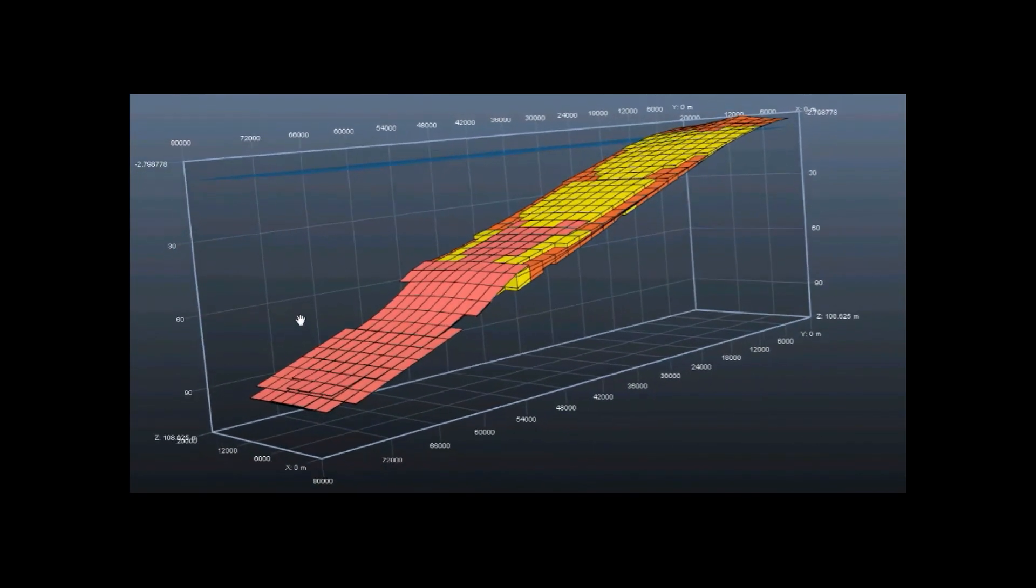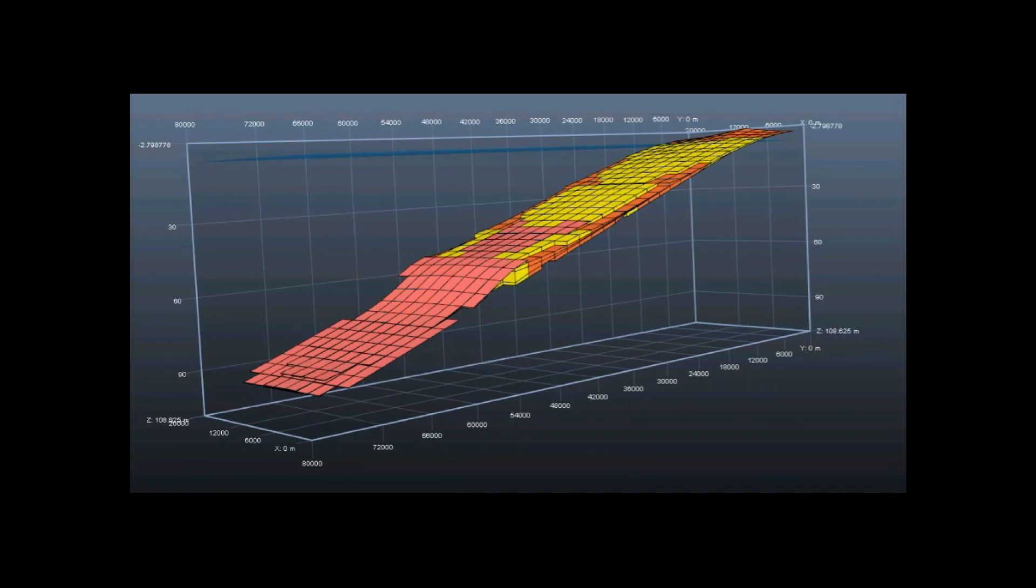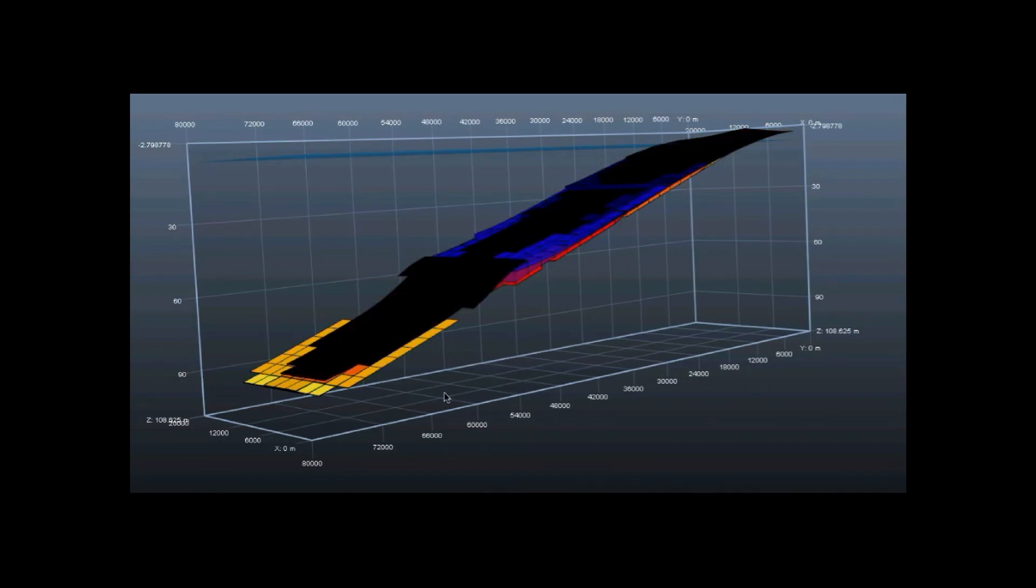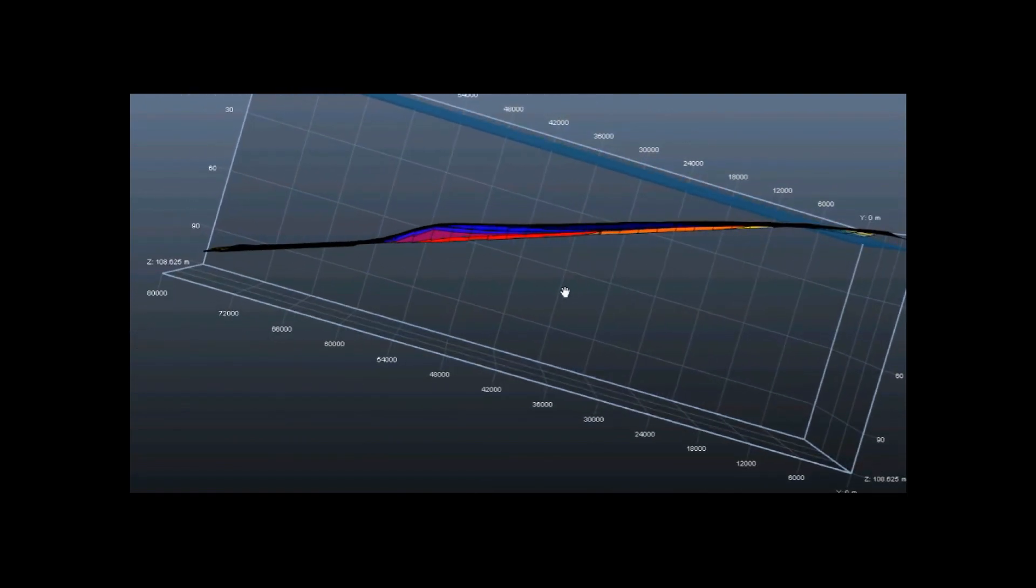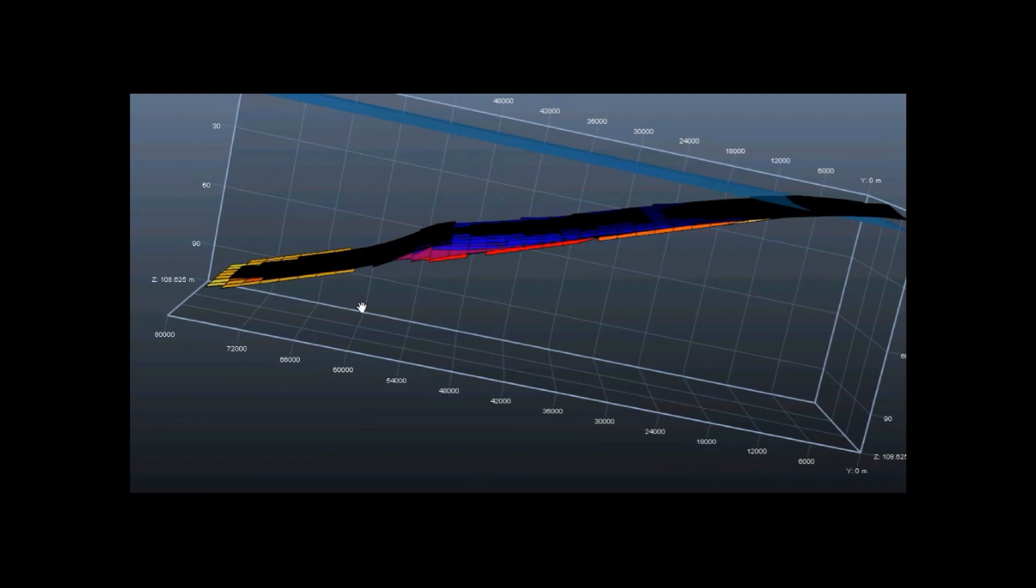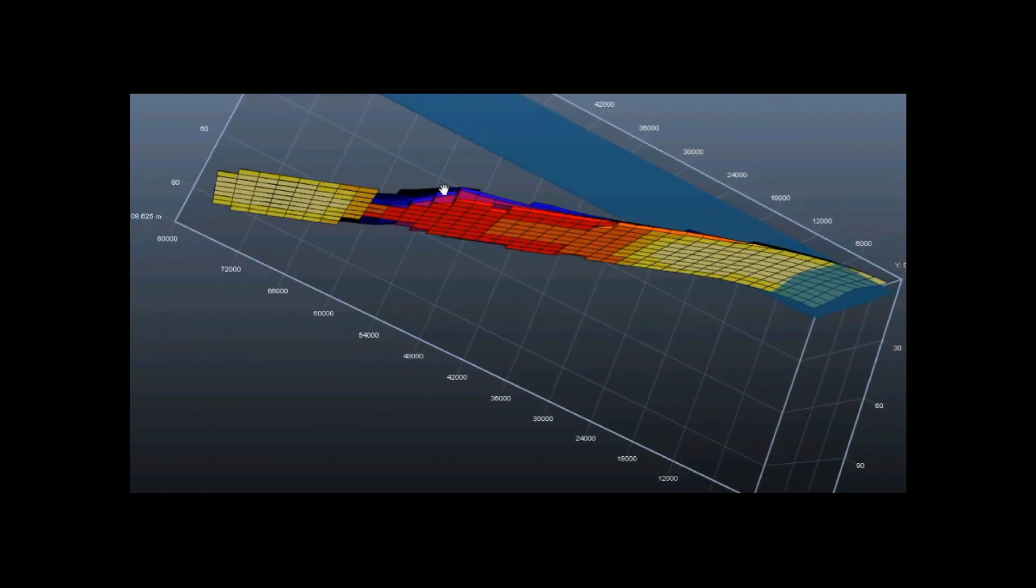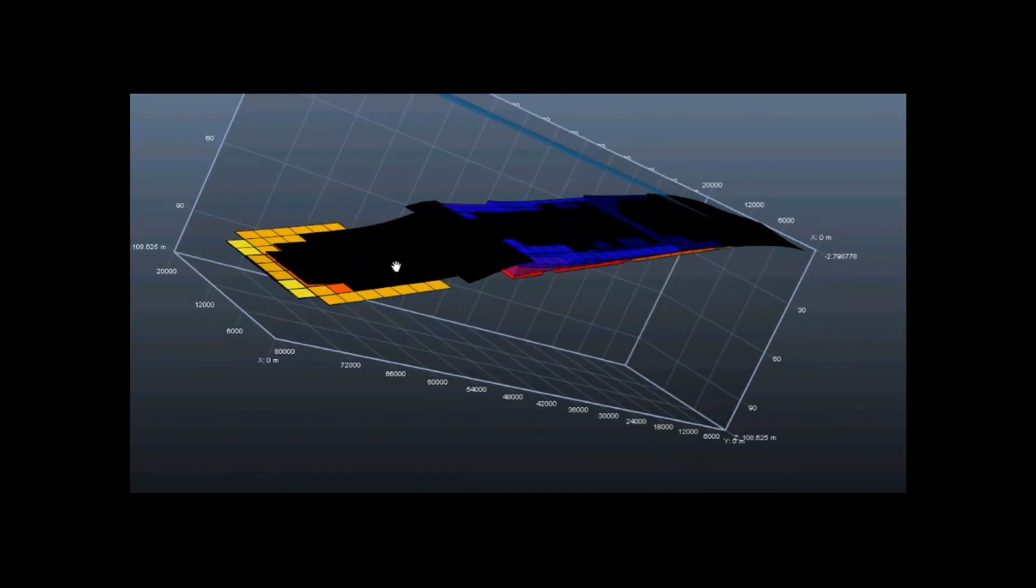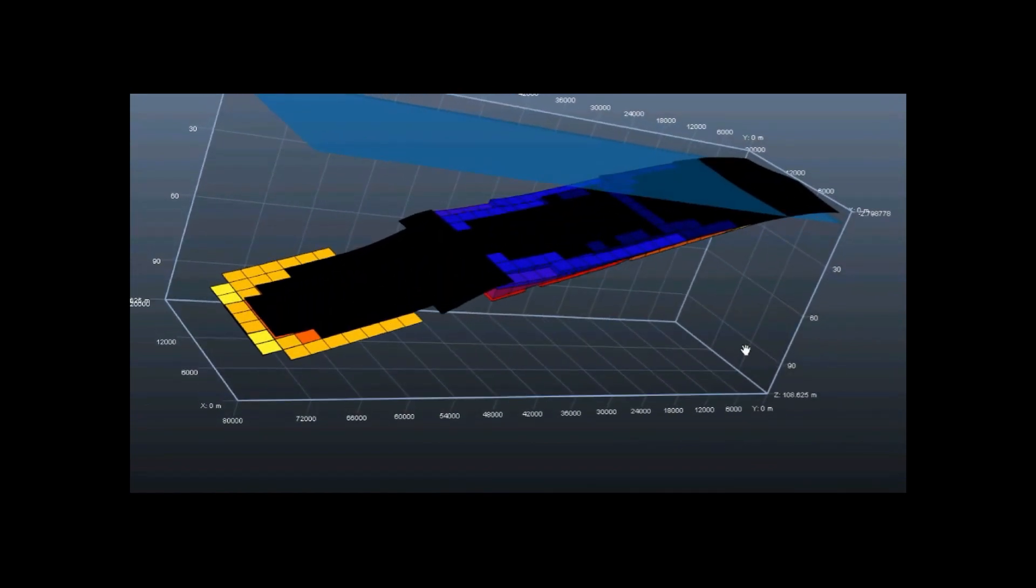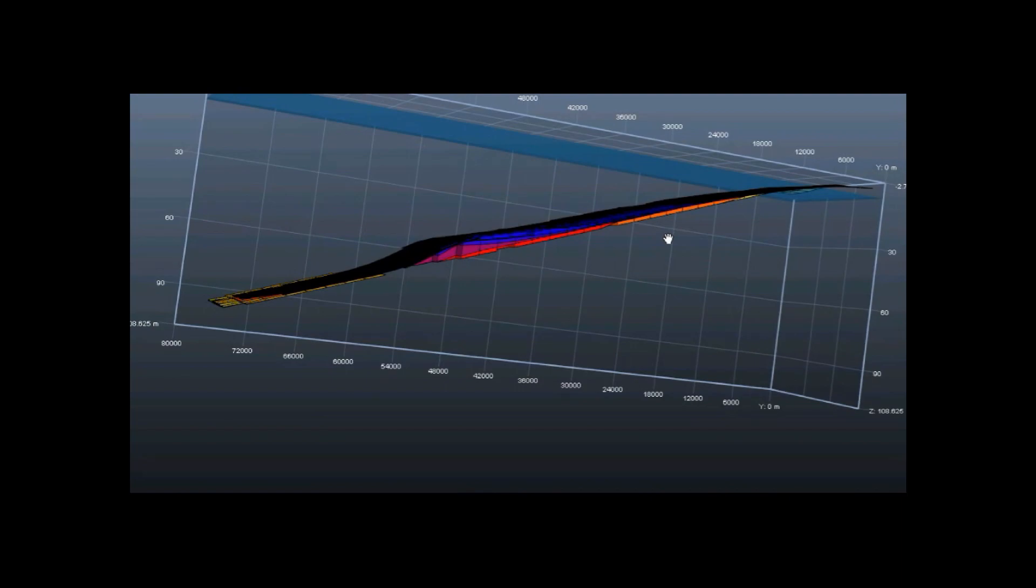But now of course we can plot the age of deposition of this sediment, because we know it, this is a part of the model. Now you see immediately that some are orange, yellow, these are the oldest sediments, and some are black, those are the youngest sediment. So this sheet of sand, this lithostratigraphic unit, is not a time unit, it is not a chronostratigraphic unit.